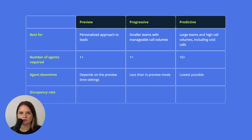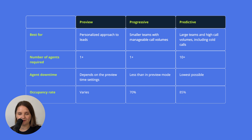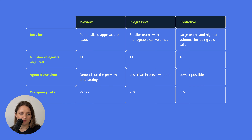Occupancy rate is a percentage of time when agents are actively engaged in the call or doing some post-call activities. It varies in the Preview mode, as it depends on the agent's work pace. It's about 70% for Progressive and 85% for Predictive. The Predictive mode has the highest occupancy rate, which means agents are more likely to spend time actively working on calls and managing call-related details, resulting in the least amount of downtime.